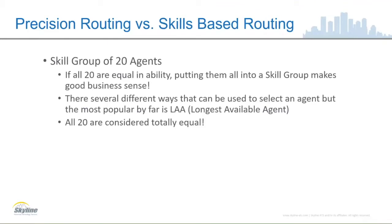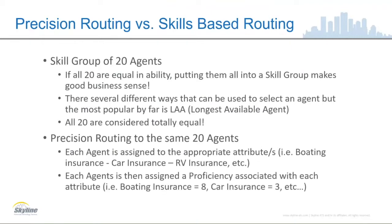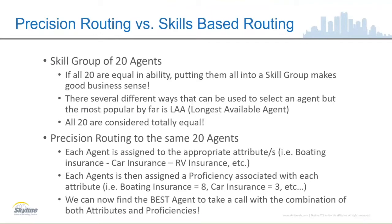Let's take the same 20 agents and look at them from a precision routing perspective. First of all, each agent needs to be assigned to an appropriate attribute, and they can be assigned to multiple attributes. Let's give an example: this is an insurance company and they sell more than one type of insurance — each one of those could be an attribute. Then you take Mary, George, and Steve and assign them to the attributes they're able to handle. The next part is we can add a proficiency associated with each attribute. Mary could be really good at boating insurance — we give her an eight; car insurance a three. Between the attributes and the proficiencies assigned to agents, we can narrow it down by business rules to find the best agent to take the call.